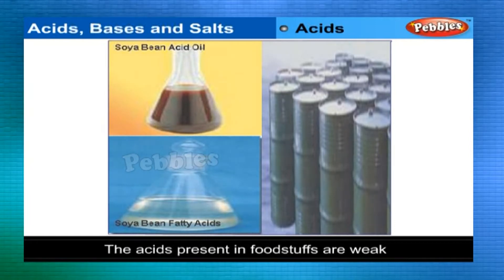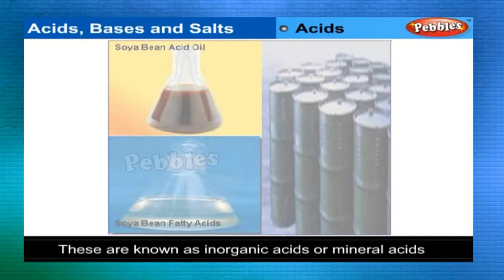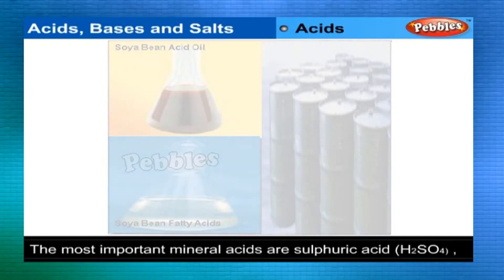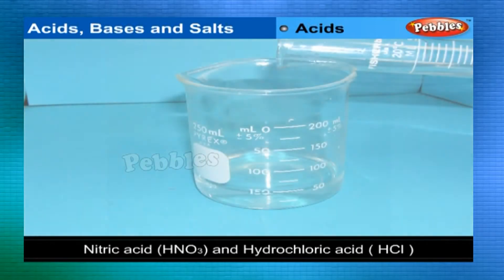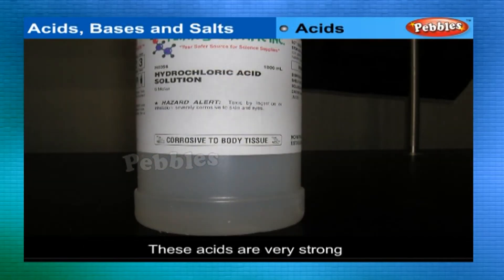The acids present in foodstuffs are weak. Chemists have prepared several important industrial acids synthetically. These are often manufactured from minerals and are therefore known as inorganic acids, or more commonly as mineral acids. The most important mineral acids are sulfuric acid (H₂SO₄), nitric acid (HNO₃) and hydrochloric acid (HCl). These acids are very strong.